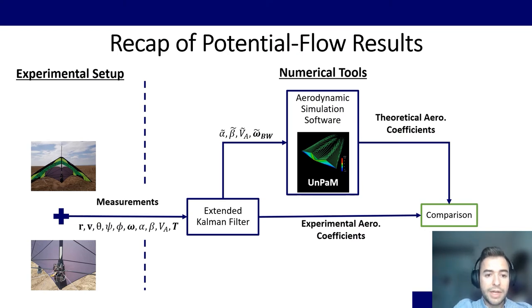So just a small recap of the potential flow result that we obtained last year. I'm reviewing this because we are using part of this methodology in the progress of the new year. So basically, we get our experimental setup, which is composed of the avionics on board the kite and also some on-ground sensors. We get the raw measurements and then we feed these measurements to an extended Kalman filter.